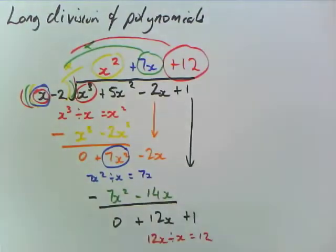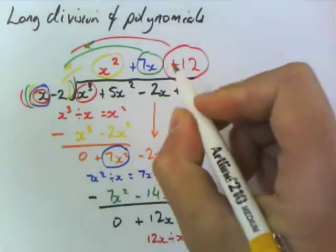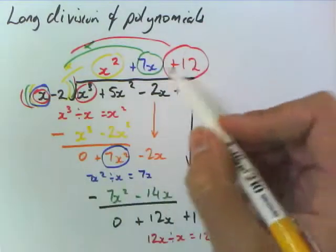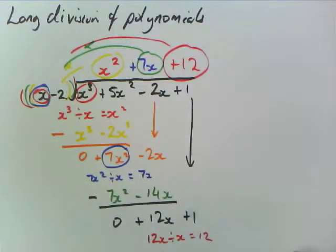So 12x times x is 12x, 12 times, sorry, 12 times x is 12x, 12 times negative 2 is negative 24.